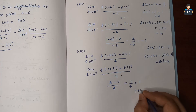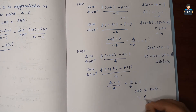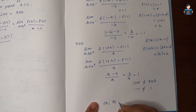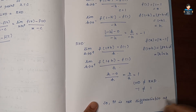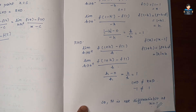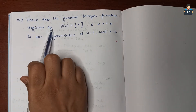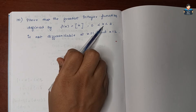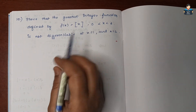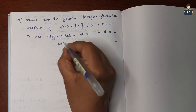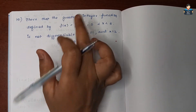Left-hand derivative = −1 and right-hand derivative = 1, so they are not equal. Therefore f(x) = |x - 1| is not differentiable at x = 1. Next, Question 10: prove that the greatest integer function f(x) = ⌊x⌋, for x in (0, 3), is not differentiable at x = 1 and x = 2.